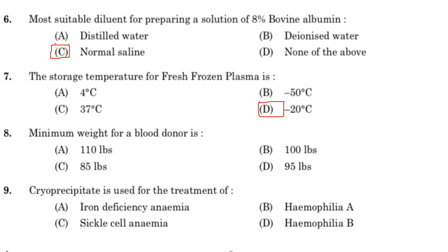Eighth question: minimum weight for a blood donor. Option A: 110 lbs. Option B: 100 lbs. Option C: 85 lbs. Option D: 95 lbs. Answer is Option A, 110 lbs, approximately 49 kg.